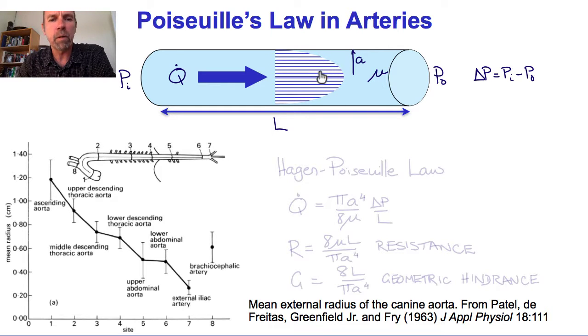And integrating that parabolic flow profile for a length L gives rise to the Hagen-Poiseuille law for the flow q dot as a function of the pressure gradient delta p over L, being q dot equals pi a to the fourth over 8 mu, delta p over L.